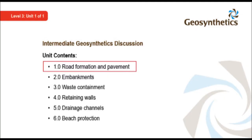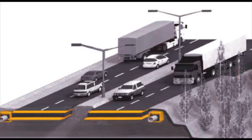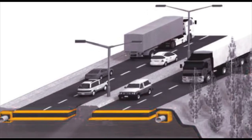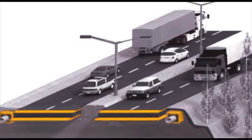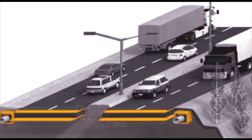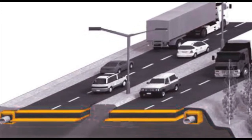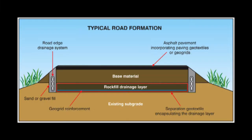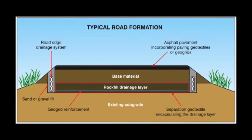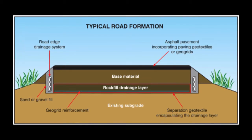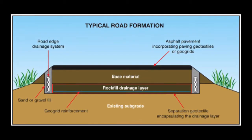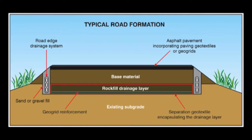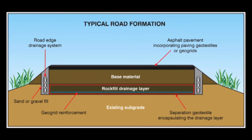The first structure we look at is the road formation and pavement. We drive on roads every day, but few people understand the engineering required for modern road construction. This image shows geosynthetics being used for separation, reinforcement and drainage functions. A typical road formation structure will have various components where geosynthetics can play an important role. Here is a typical cross section of a road, showing the sub base and pavement as well as the drainage system. Highways are designed to achieve a hundred years working life, and all components of the road formation must contribute and interact to achieve this goal.